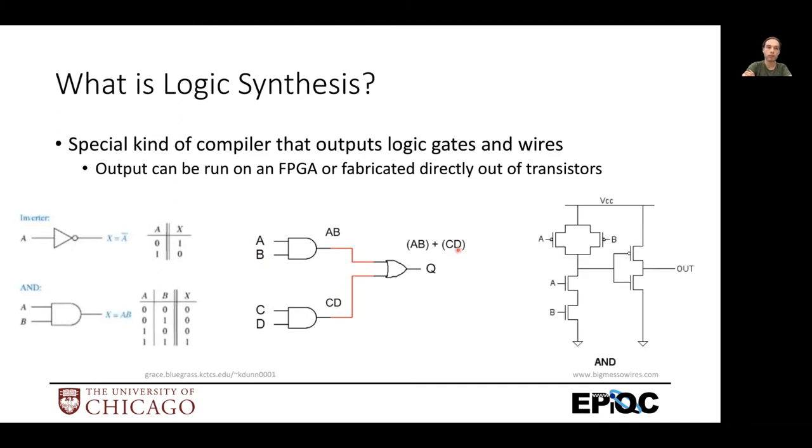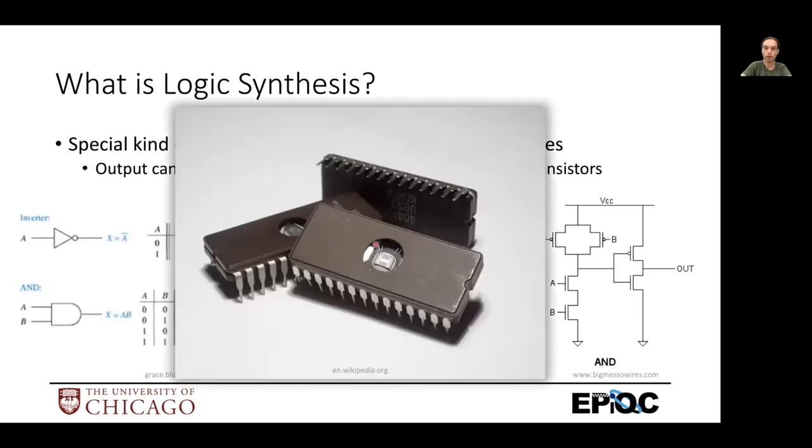And instead of getting an executable file like on your computer that you can run, you actually get a design file with transistors on it that describe, for example, a chip that you can fabricate. This is the result of your compiled program. And if you power this with some voltage, each of these pins here is an input or an output, and it actually runs whatever program you compiled and fabricated on this chip.